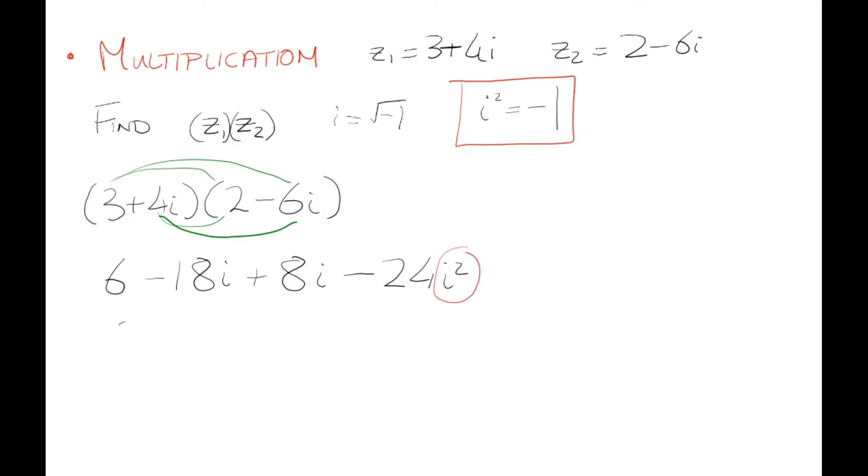Something we have to be on the watch for is this i², changing to -1. So 6 - 18i + 8i is -10i, and then -24 by -1 is +24. Essentially we have 6 + 24 = 30, and our imaginary part is -10i. Always watch out for the i² and change them to -1.